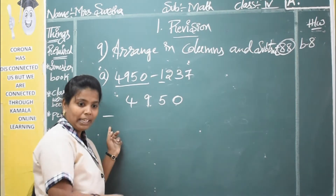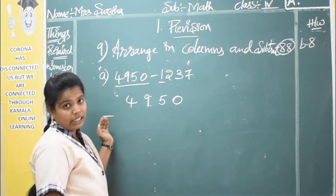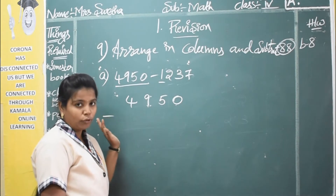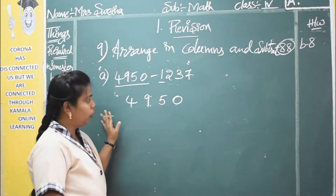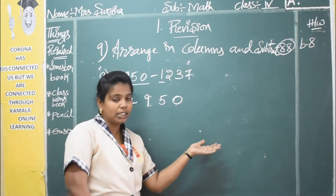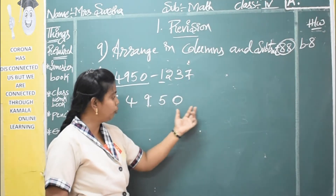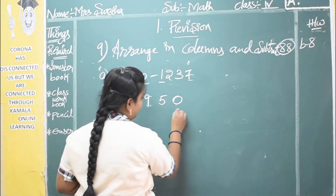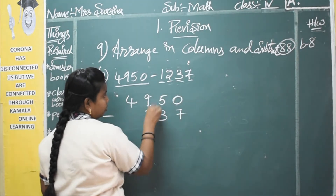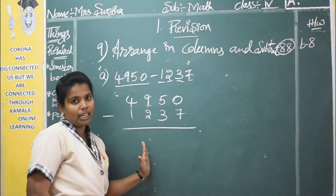Give space between numbers and write the symbol — whatever operation you are doing: if addition write plus, if subtraction write minus, if multiplication or division write the corresponding symbol. You have to compulsorily mention that. When writing the second set of numbers, same as before, you have to write from the last. Take the last number and write from the last: 3, 2, 1.